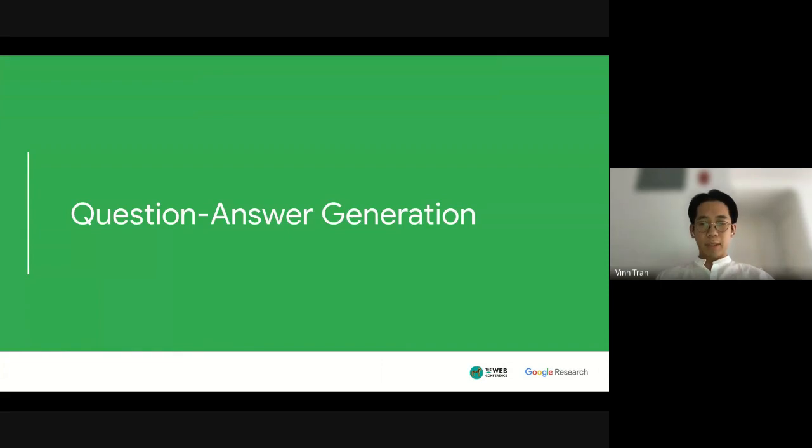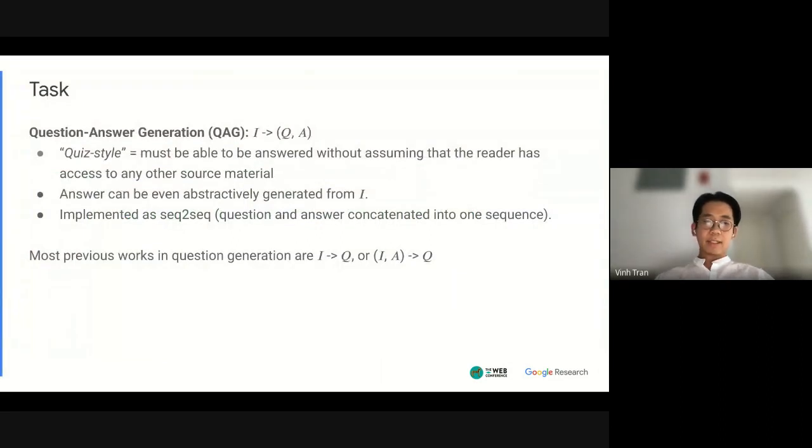The first component is question answer generation and I'll be describing how we tackle this problem. So the task of question answer generation is given an input passage generate the question and answer pair and the special requirement that we have here is that the question must be quiz style meaning that it must be able to be answered without assuming that the reader has access to any other source material so it cannot reference any sort of passage. The answer here can even be abstractively generated from the input passage and does not have to be an extractive span and we actually implement this solution as a sequence to sequence model where we generate the output sequence which is a concatenation of the question and answer.